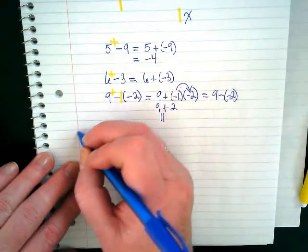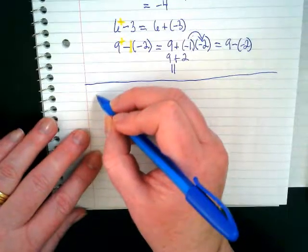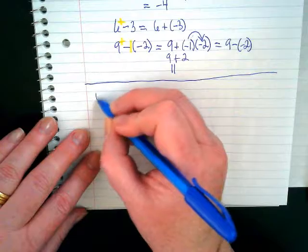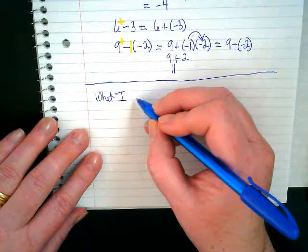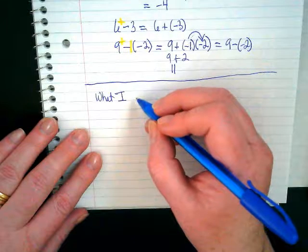I want you to draw a line under and write what you know about invisible numbers and symbols. Why do we have them? And what number and sign are they usually?